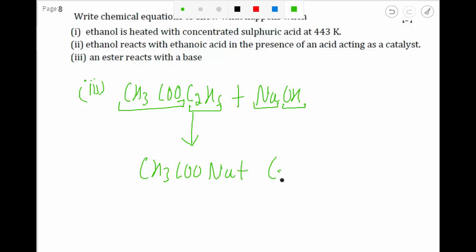So it will result in the form of sodium acetate and ethanol. So an ester reacting with base gives you the salt of the carboxylic acid and an alcohol. So this will be the products of this reaction.